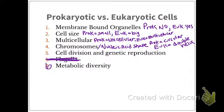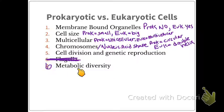For cell division and genetic reproduction: prokaryotes can have asexual reproduction and conjugation. Eukaryotes can have sexual reproduction. Metabolic diversity is also very different — we'll get into photoautotrophs, chemosynthesis, and photoheterotrophs, because prokaryotes have a wide variety of ways they obtain and use energy.